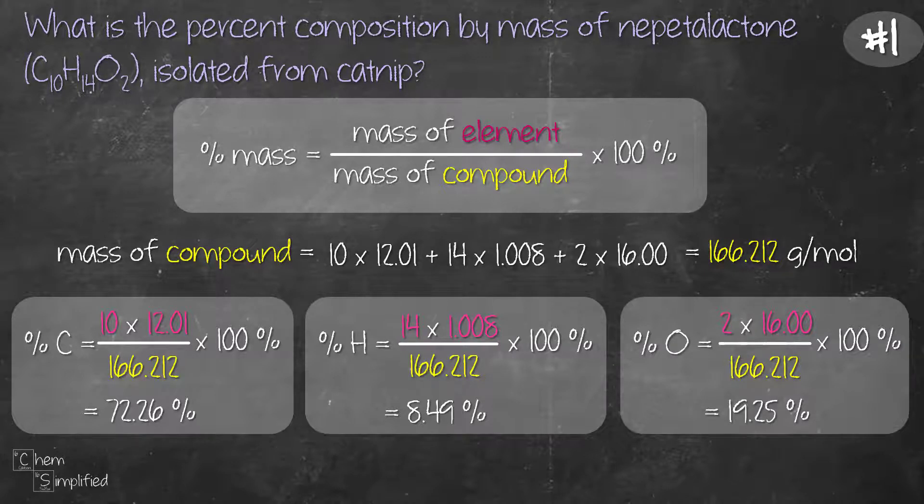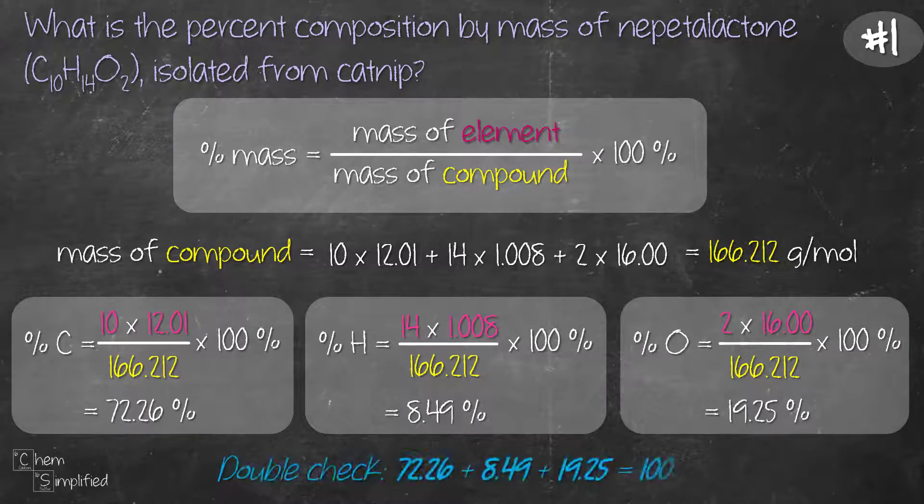Now we can quickly check our work by adding up all the percentages we have found for carbon, hydrogen and oxygen. These three numbers should add up to 100 percent. This is the method for calculating the percent composition by mass using theoretical values.